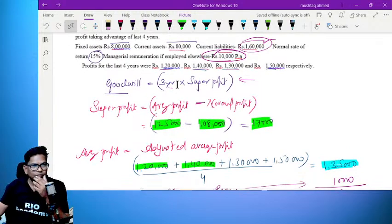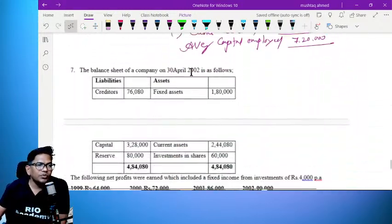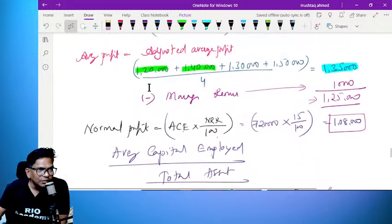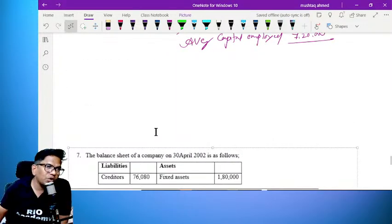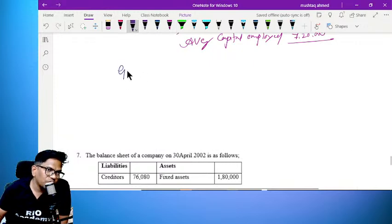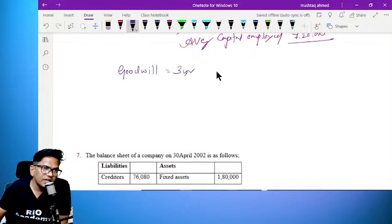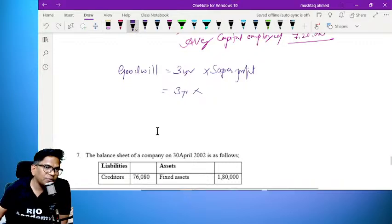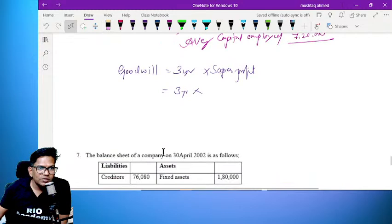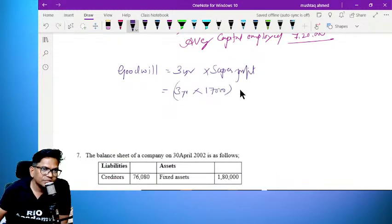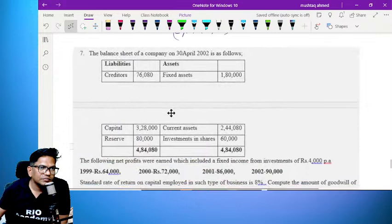Goodwill is 3 years into super profit. Super profit is 17,000. So goodwill equals 3 years into 17,000, which equals 51,000. Exactly right.